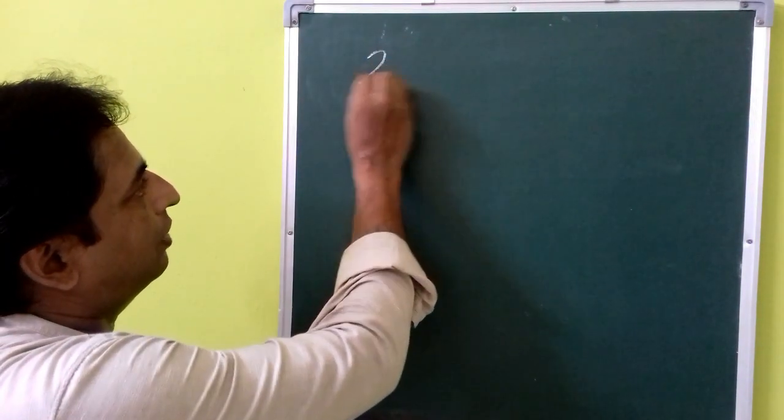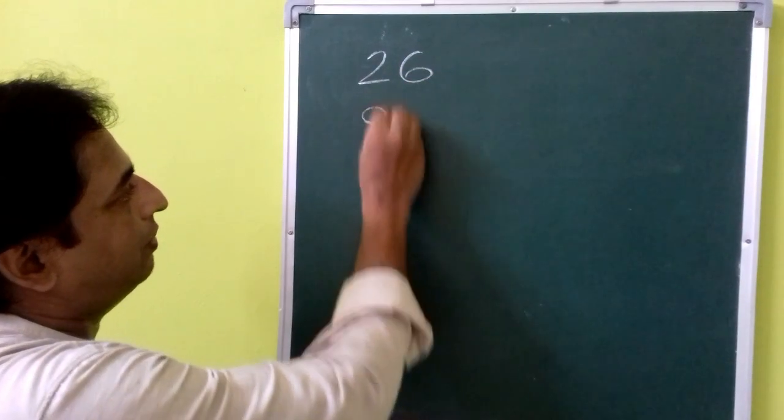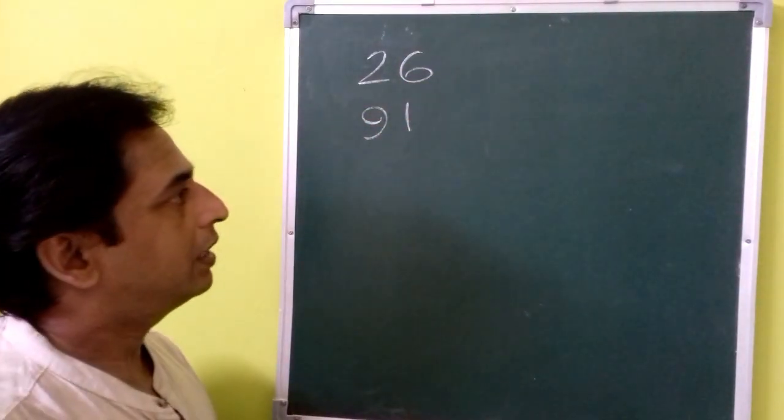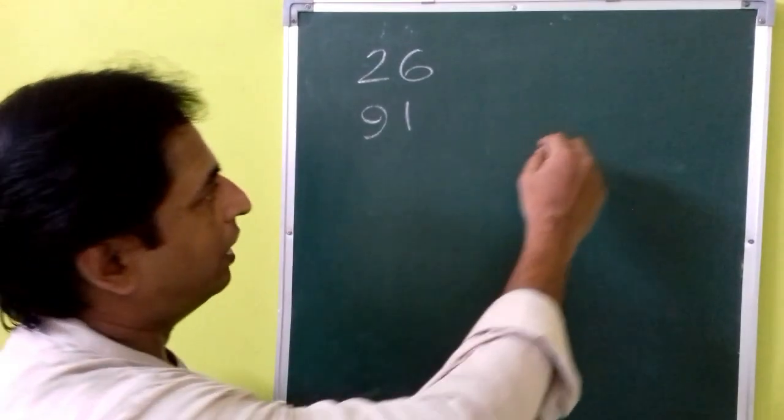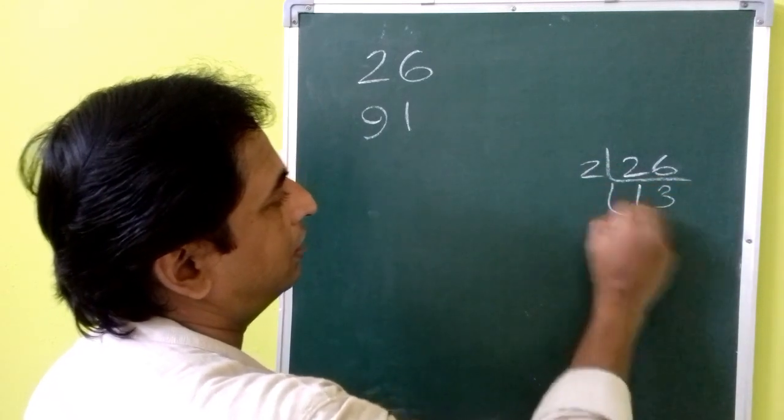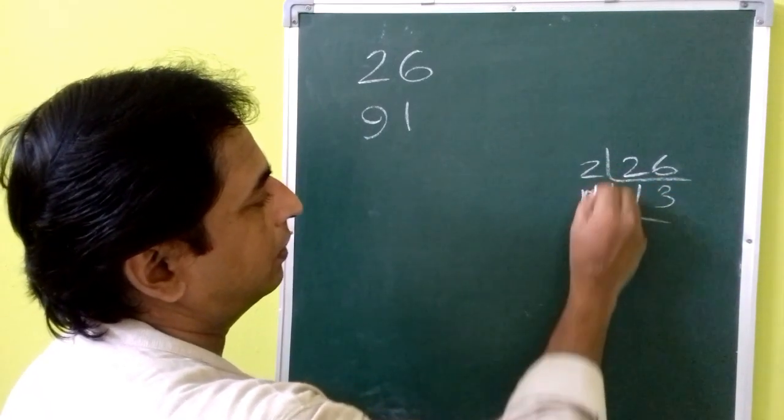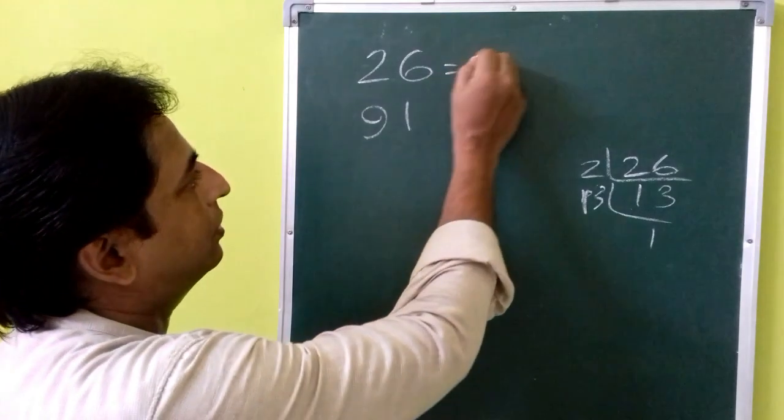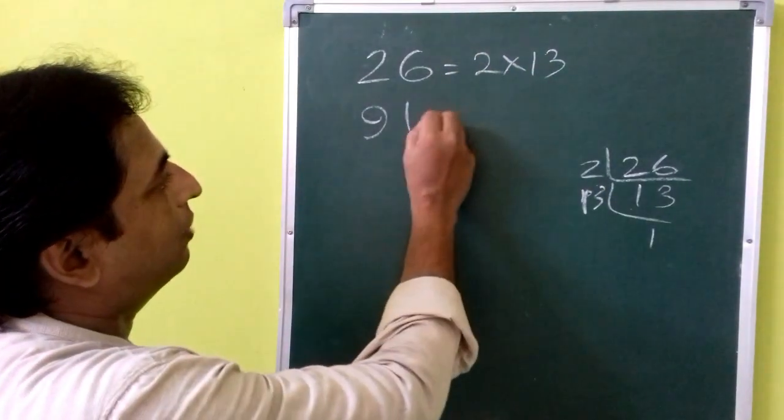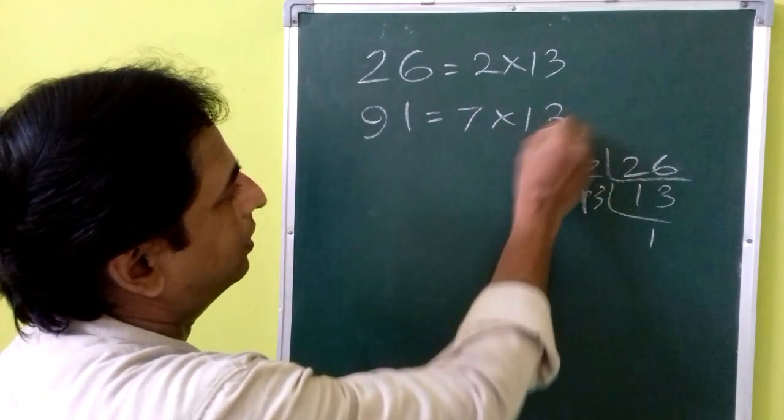First pair of numbers are 26 and 91. So for finding the LCM and HCF, let's use the prime factorization. 26 is equal to 2 times 13 and 91 is actually 7 times 13.